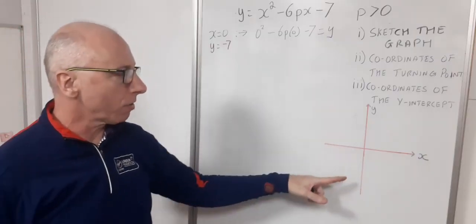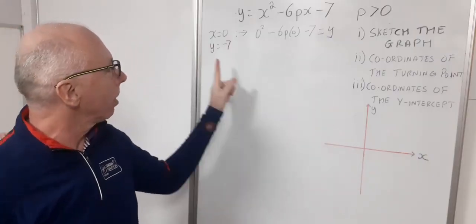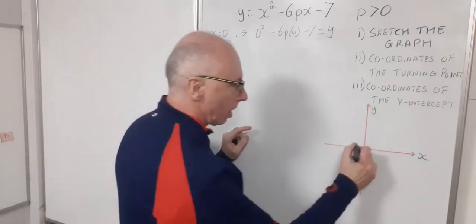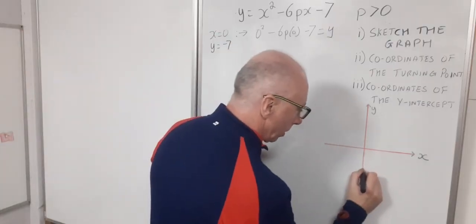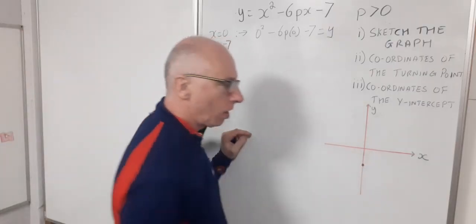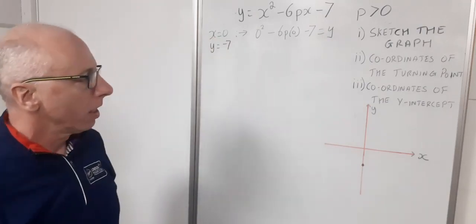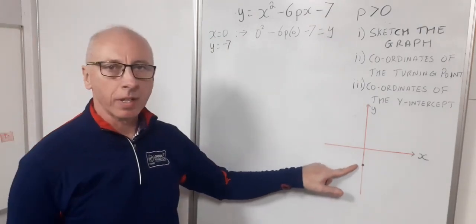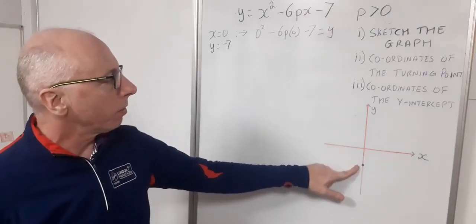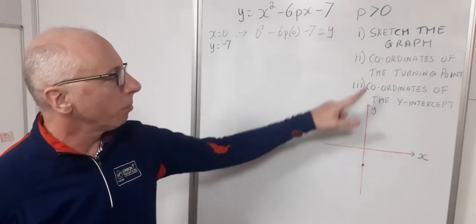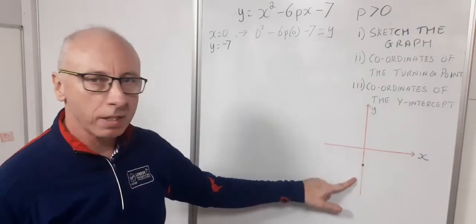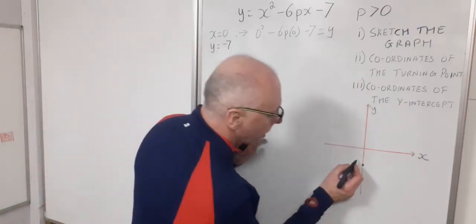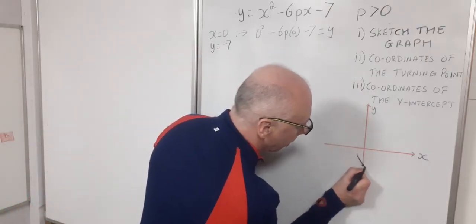So let's pick a point on this graph here where x could be 0 and y could be minus 7. So y is minus 7, maybe somewhere around that point there. Let's sketch a quadratic with the y-intercept at that point there. We know that the turning point is going to be below this. So the quadratic is going to come down something like that.